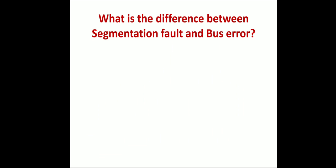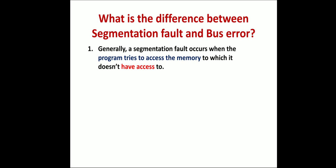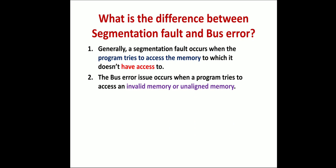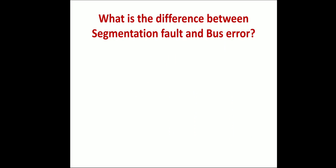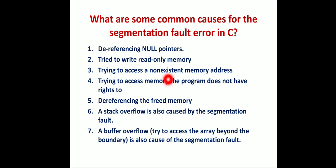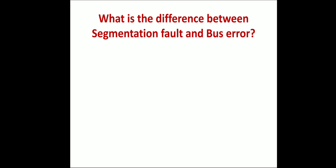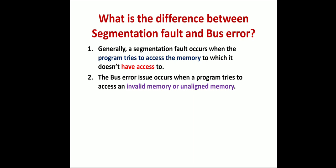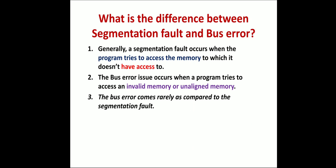What is the difference between a segmentation fault and a bus error? A segmentation fault occurs when a program tries to access memory to which it doesn't have access. A bus error occurs when a program tries to access invalid memory or unaligned memory — invalid memory is different from simply not having access rights. Going out of boundaries is relevant here, but bus error specifically relates to invalid or unaligned memory, not just restricted memory. The bus error occurs rarely compared to the segmentation fault — segmentation fault is a common error, but bus error is a rare one.